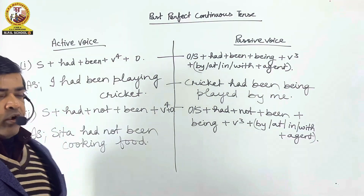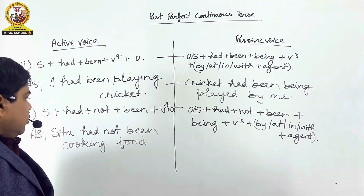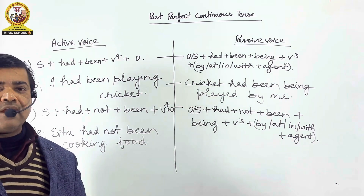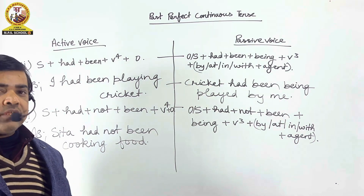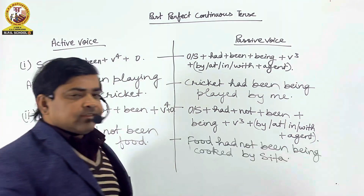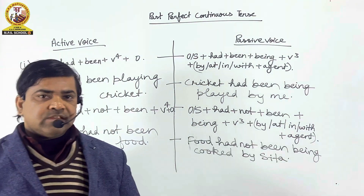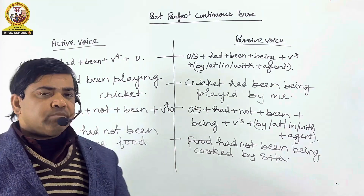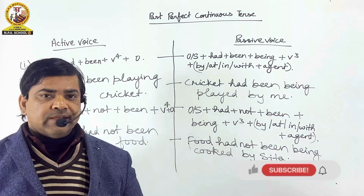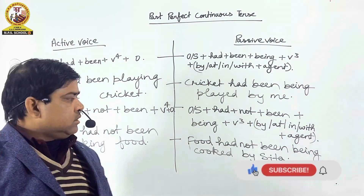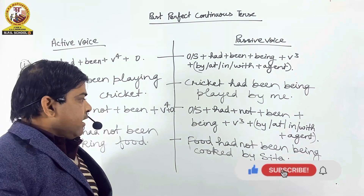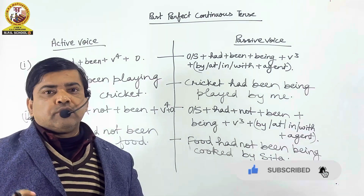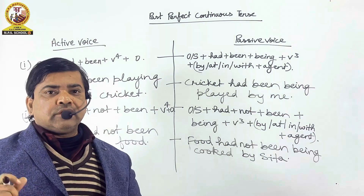For example: 'Sita had not been cooking food.' Sita khana nahi banati rahi thi. The sentence in passive voice is: 'Food had not been being cooked by Sita.' Khana Sita ke dwara nahi banai jati rahi thi.